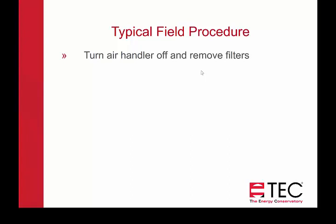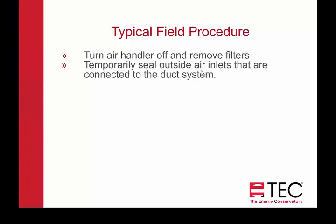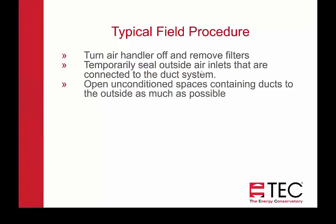The procedure when you're doing a duct leakage test: turn off the air handler and always remember to remove the filters. You'll want to temporarily seal any intentional openings, like an air inlet connected to the duct system — you're trying to measure the unintentional duct leaks. So you'll want to seal off intentional leaks like a pressure intake going to the outdoors connected to a return duct. You'll want to open unconditioned spaces containing ducts to the outside as much as possible — this is also the case when doing duct blaster tests. If you've got a vented crawl space, make sure the vents are open, or if there's a door in the crawl space, open the door.